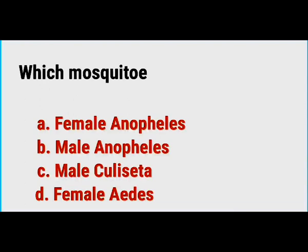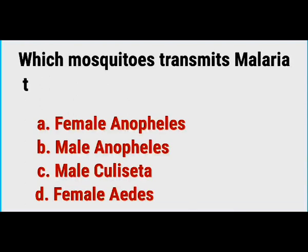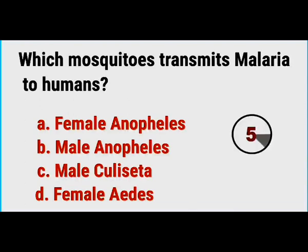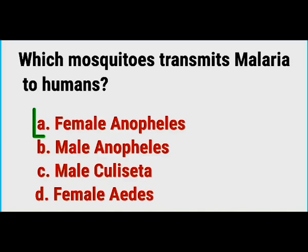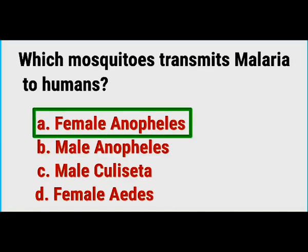Which mosquito transmits malaria to humans? The correct answer is the female Anopheles mosquito.